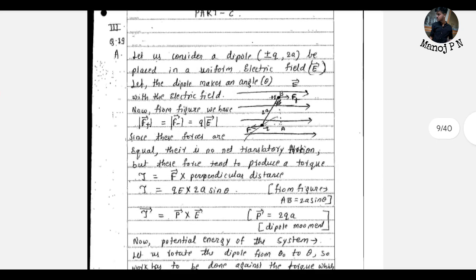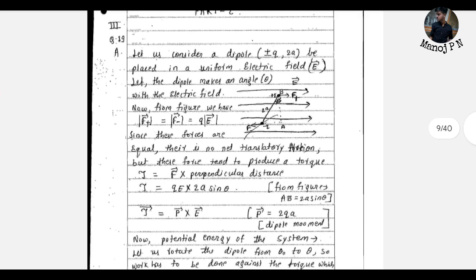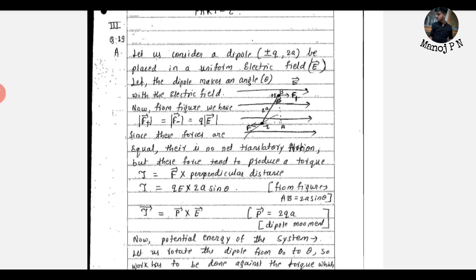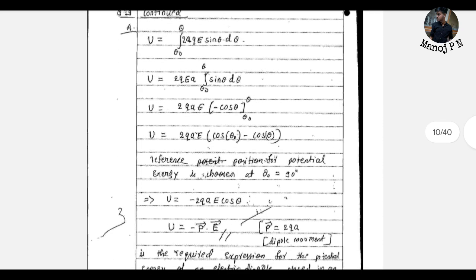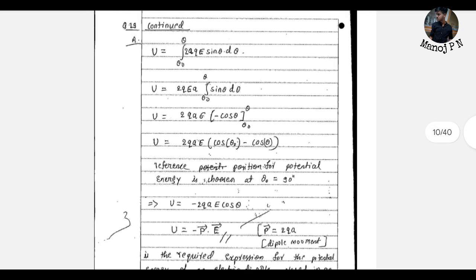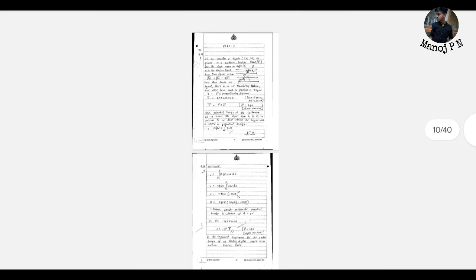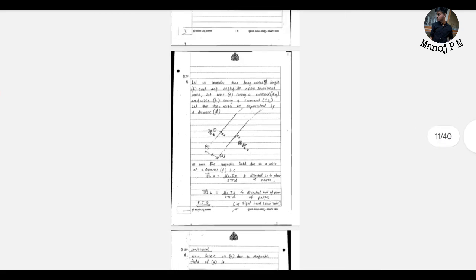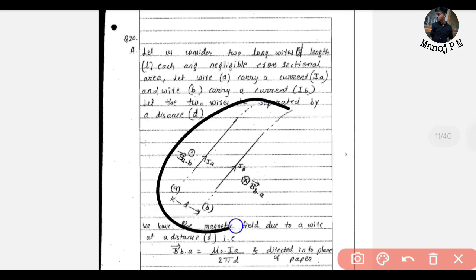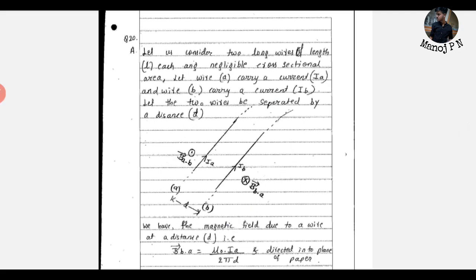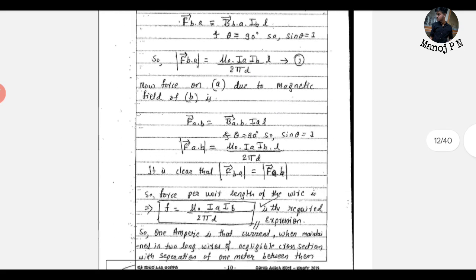So this is how you are supposed to attend. If you have a derivation, make sure a diagram is proper — a diagram is marked. If you have a diagram and you miss it, you will be losing marks. So if you have a derivation, make sure you draw the diagram correctly.